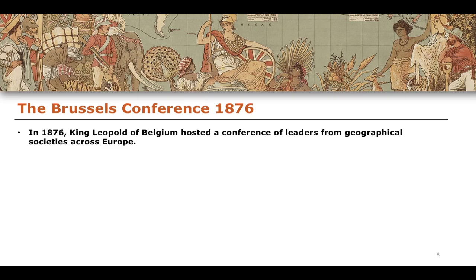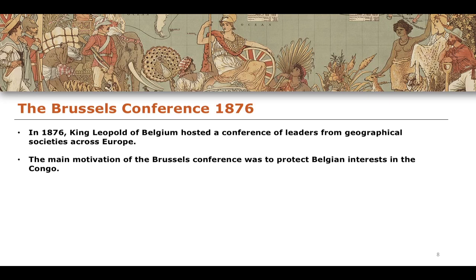Beginning with the 1876 Conference in Brussels, the King of Belgium, King Leopold, hosted the conference for leaders from geographical societies across Europe. The main motivation was for Belgium to protect its own interests. Belgium had quite extensive colonial ambitions in the Congo - a fact of history that is incredibly controversial, given the atrocities committed by King Leopold in that area, the impact of which is still felt to this day.